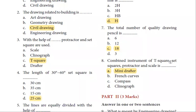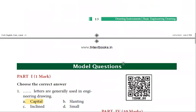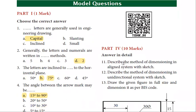Combined instrument of T-square, set square, protector and scale. There are many drafts, this is how we use the engineering drawing. Next, lines are used generally used in the engineering drawing - capital letters.